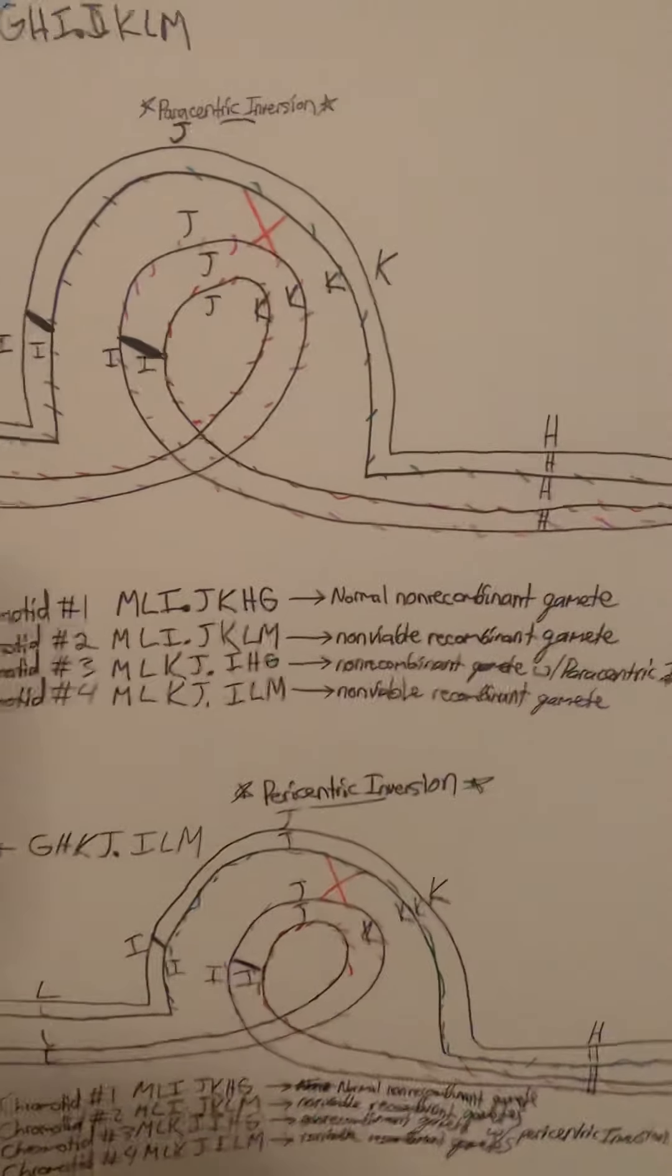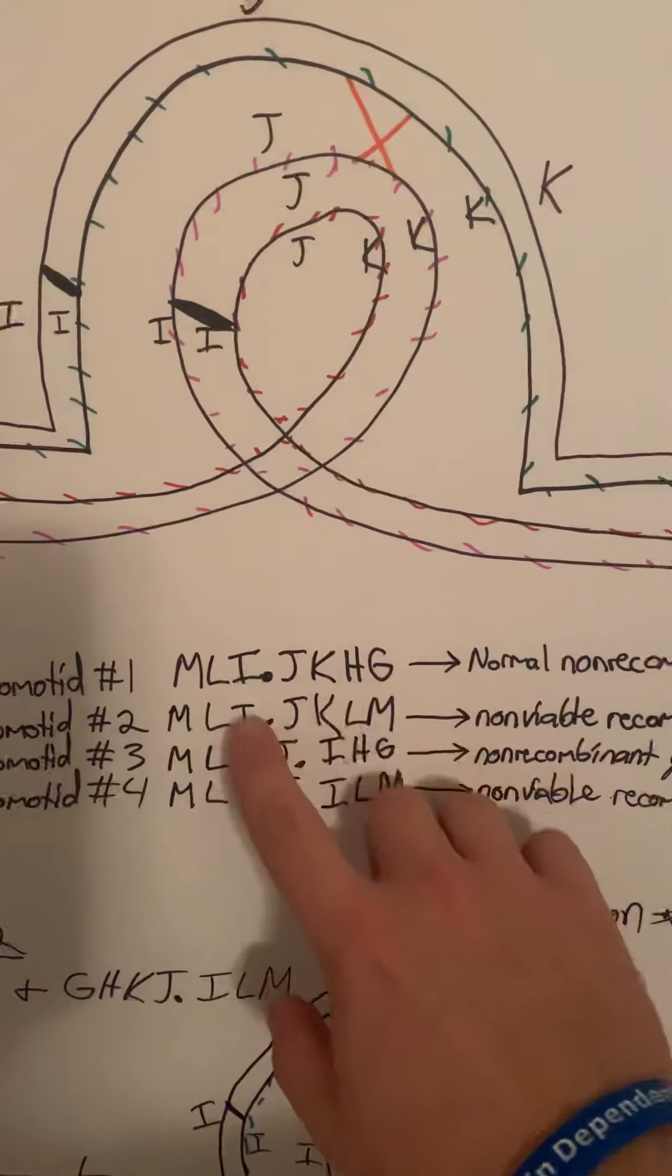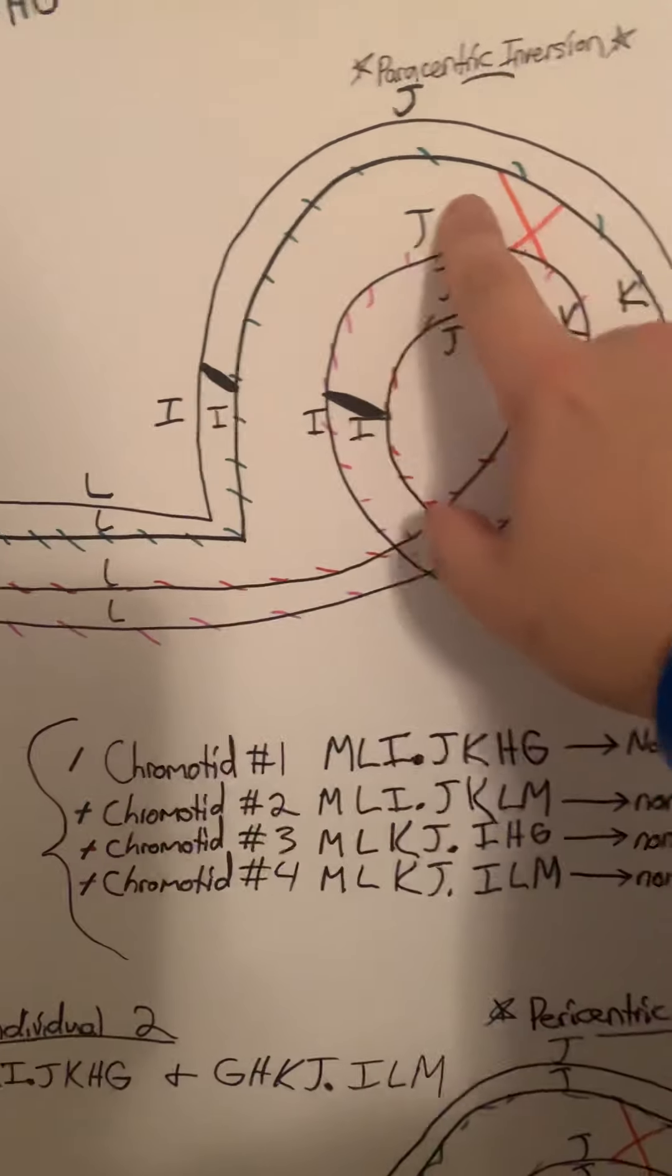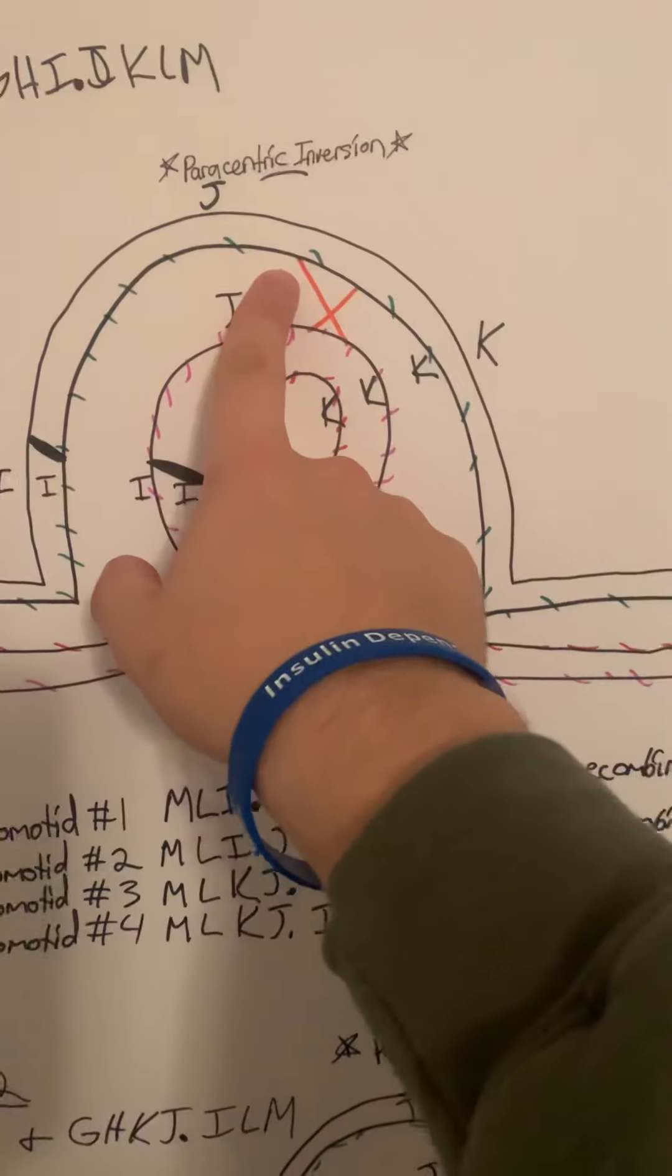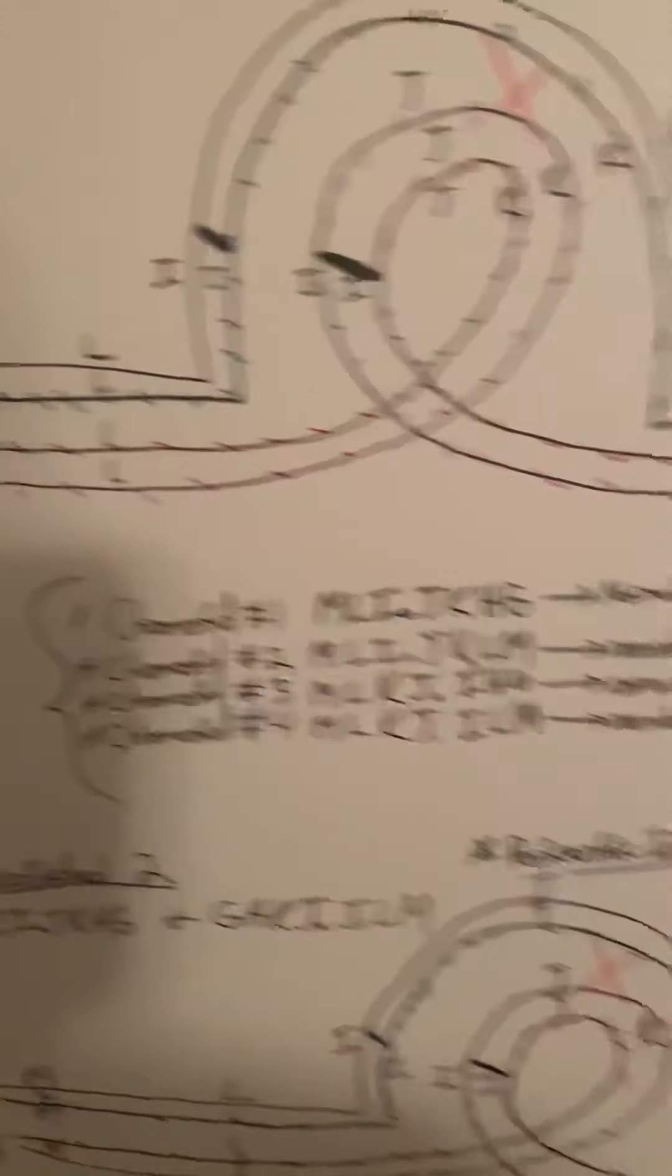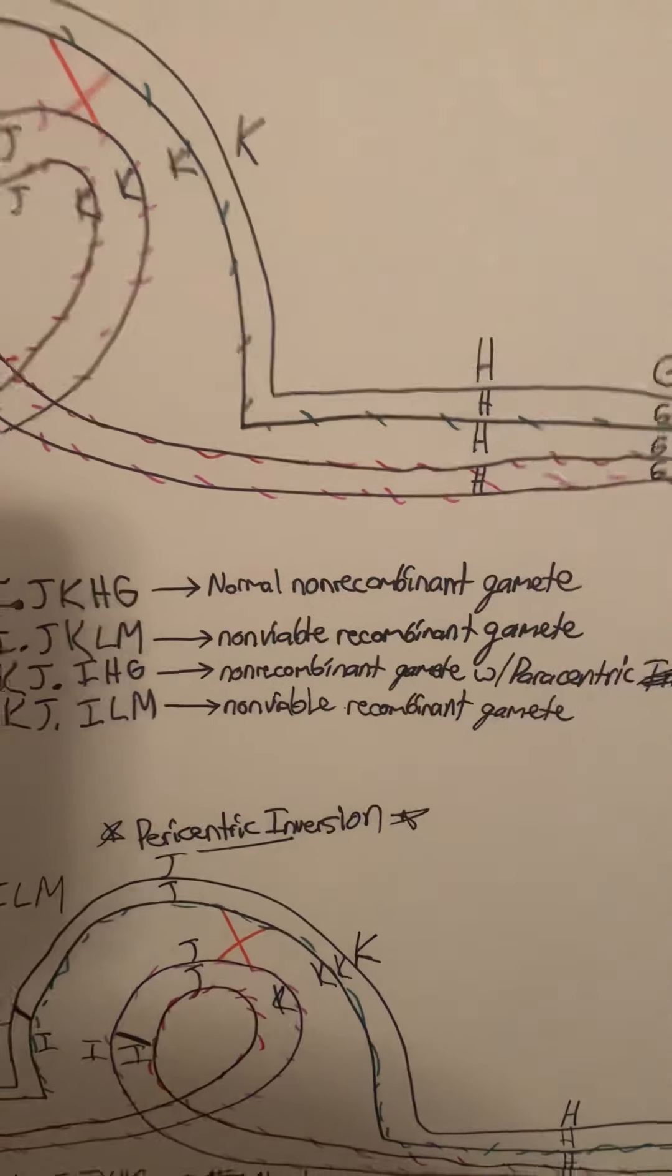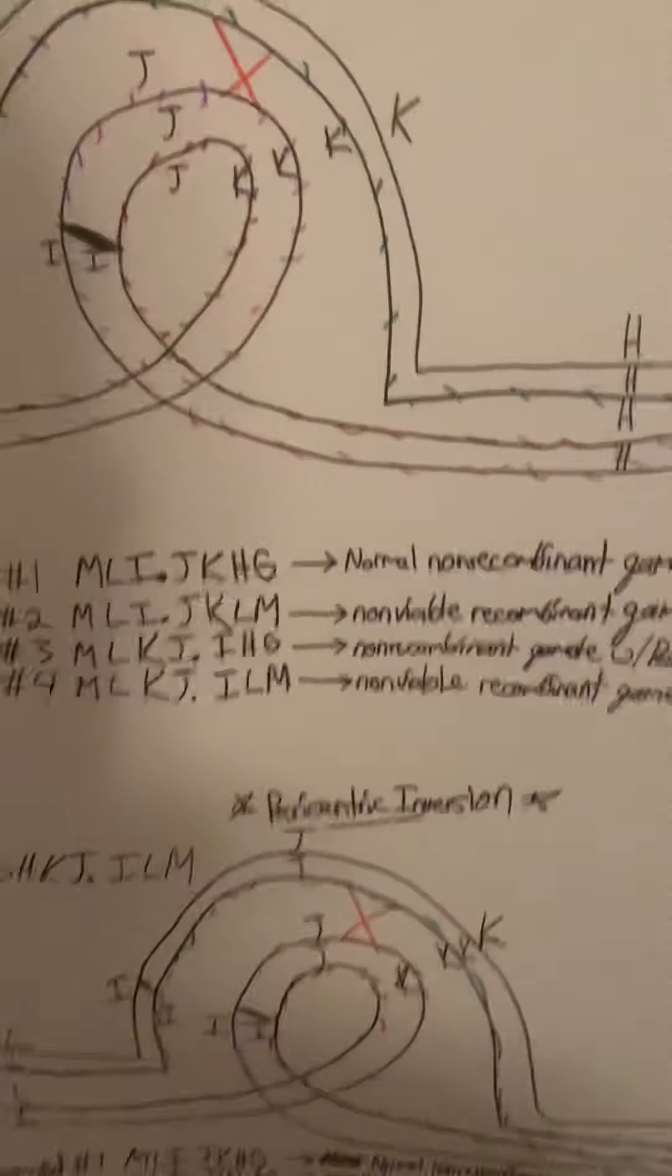Chromosome 2, however, is a different story. It would be MLI and then the centromere JKM. If you look at this one, you keep following it—centromere—and then where you get right here, you're going to have the crossover between the J and K region. You would go down here and keep following it all the way back. This would be a non-viable recombinant gamete because it's involved in the crossover as a recombinant.